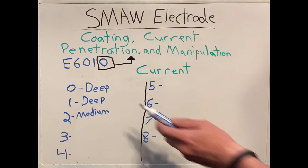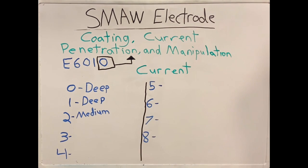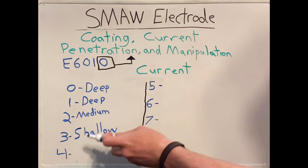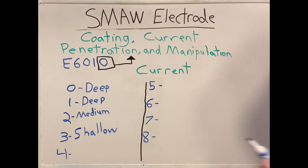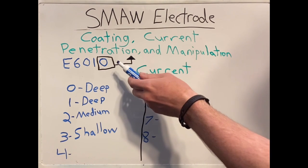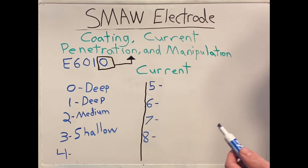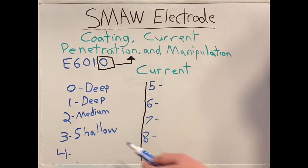If our last number is a two, it will have medium penetration. If our last number is a three, it is going to have shallow penetration. A lot of folks use E6013 rods for thinner material. For small projects, it's easier to weld with — it's a shallow penetrating rod.